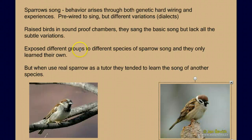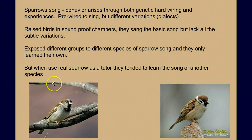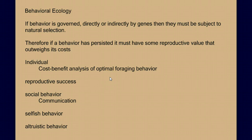Here's a quick example: sparrow song. The behavior of sparrow song arises due to genetic hardwiring and experience. If you raise sparrows in a soundproof chamber, they'll sing the basic generic sparrow song, but it will lack the subtle variations that help us distinguish between one group of sparrows and another. If you expose them to recordings of different groups of sparrows, they'll typically learn best the song of their subspecies. But if you have a real sparrow as a tutor, even a different subspecies, it will learn that song even better. So there's a genetic pre-wiring to learn song, but the environment and experience then adjust that learning.